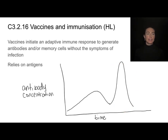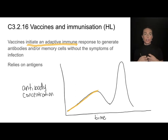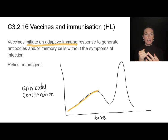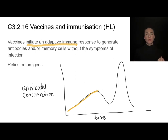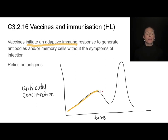What vaccines do is initiate an adaptive immune response — that first-time immune response — without the symptoms of infection. This relies on antigens. Basically, you want to inject that antigen or make sure it is in the bloodstream so the phagocytes can ingest it and present it, and activate T cells, activate B cells, produce plasma cells, and produce memory cells. But you don't want to inject the parts of the pathogen that are going to actually make you sick — it's a way of tricking our body into having this first immune response without getting sick, so that next time we come in contact with the real pathogen, we can have a very quick and vigorous immune response without ever feeling the symptoms.